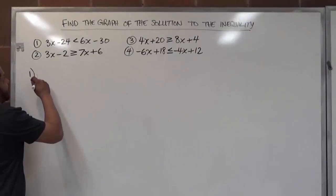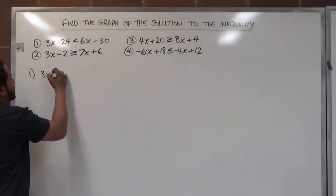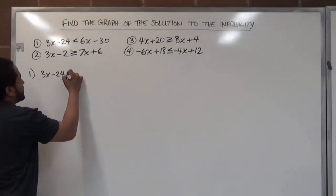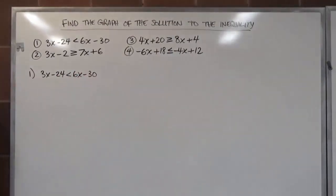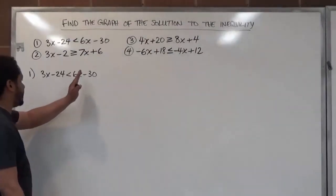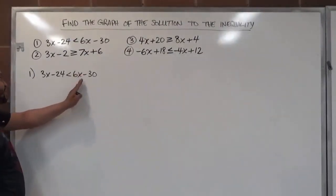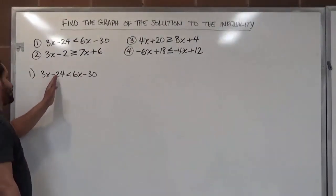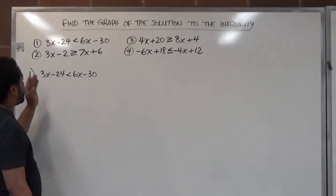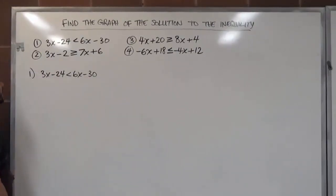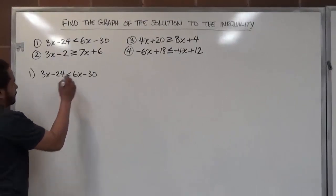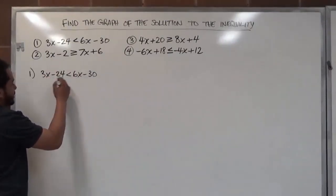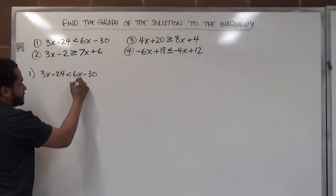These are three-step problems. Here we have 3x minus 24 is less than 6x take away 30. This is a three-step problem because it takes three steps to solve it. First, we move the x from the right side to the left. We move the constant from the left side to the right. Then we divide by the coefficient left over on the x. Let's begin by transposing the x from the right to the left-hand side using the additive inverse.